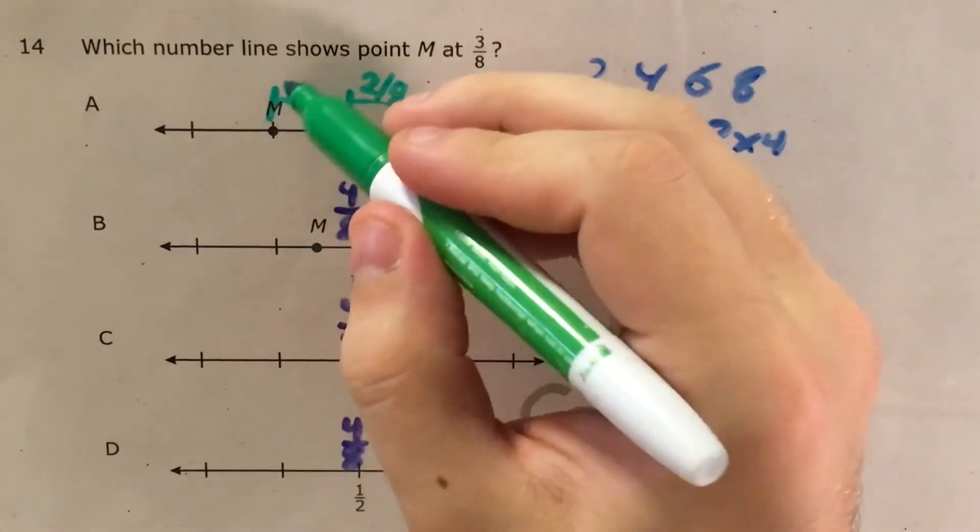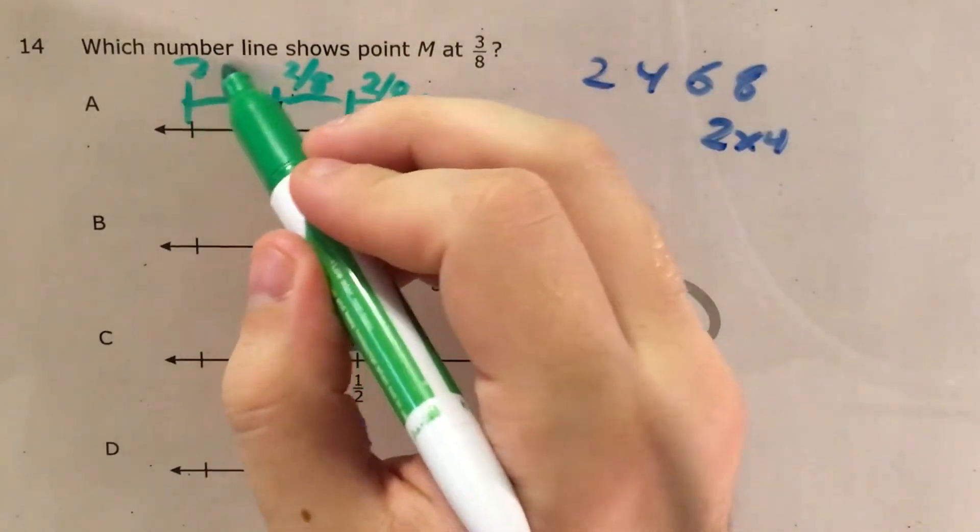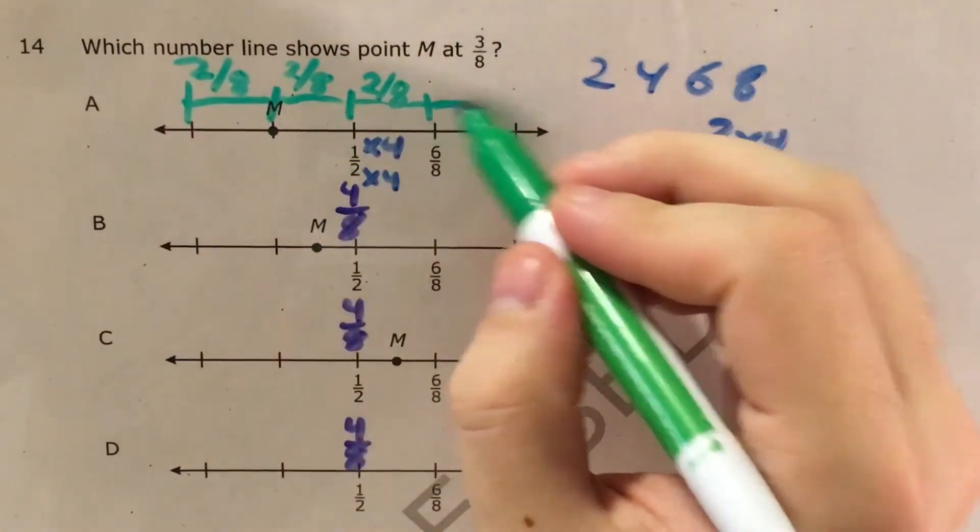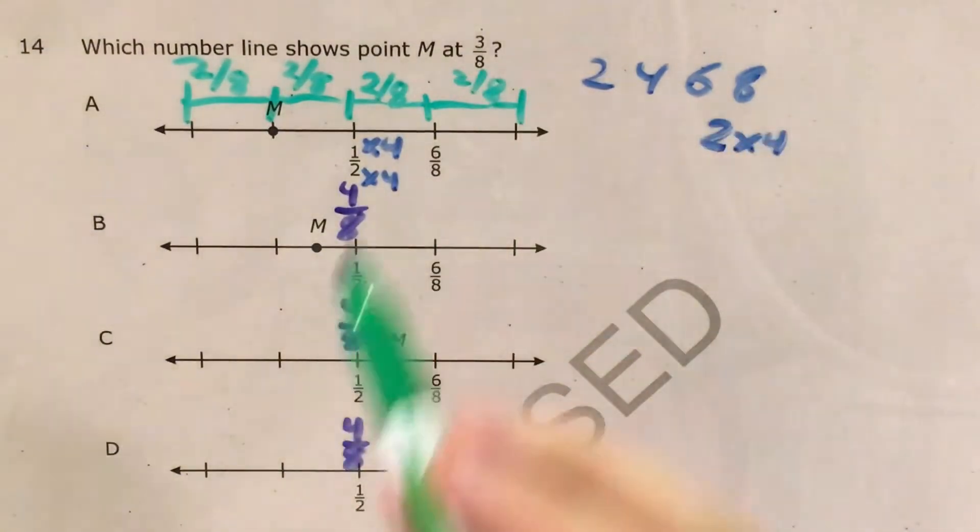So that means that each of these little spaces represents two-eighths, which means this is two-eighths, that's two-eighths, and that one's two-eighths. And it's going to be the same for each of these other number lines.